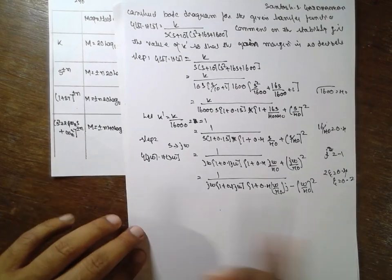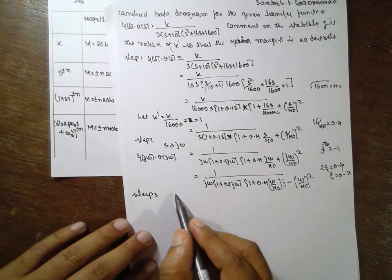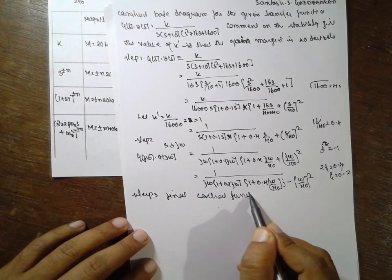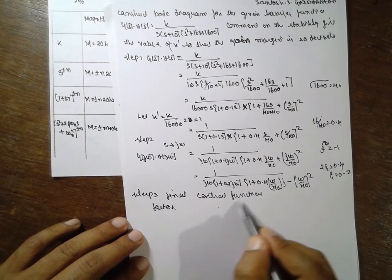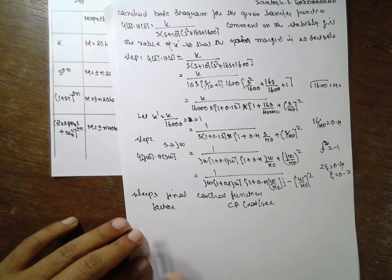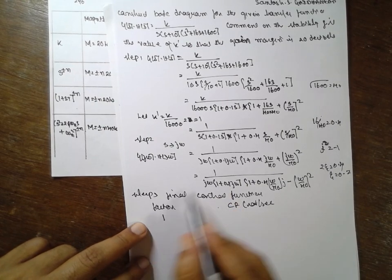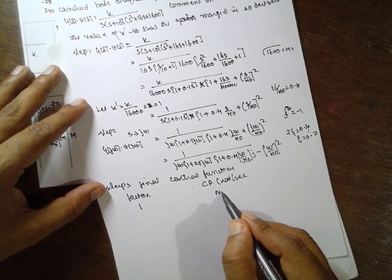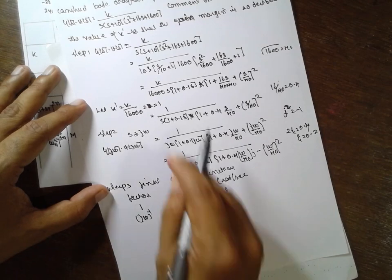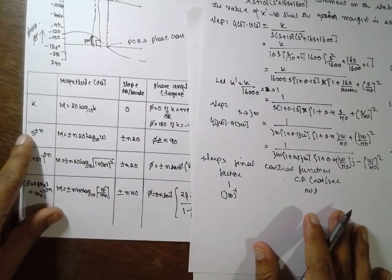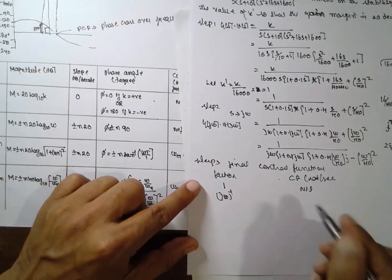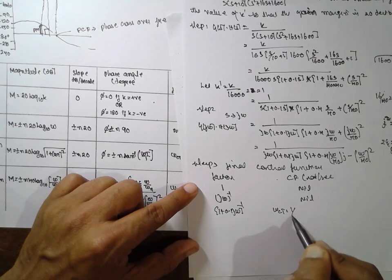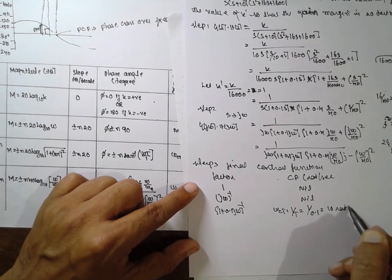Step 3: Find the corner frequencies in radians per second. First factor is constant K: corner frequency is nil. For jω raised to minus 1 (brought upward), the corner frequency is also nil. For (1 + 0.1jω) raised to minus 1, the corner frequency Wtc = 1/t = 1/0.1 = 10 radians per second.